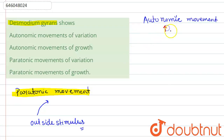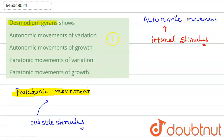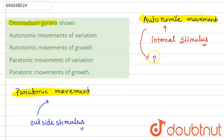And when there is an internal stimulus — because of the internal stimulus — a movement takes place in the protoplasm of a cell, that is known as autonomic movement. So in autonomic movement, there is a spontaneous movement of the protoplasm.